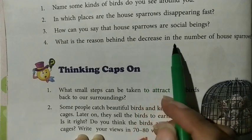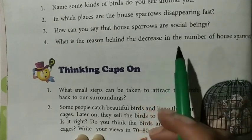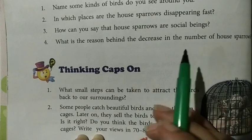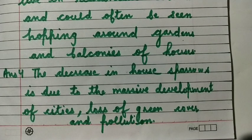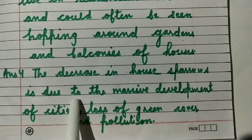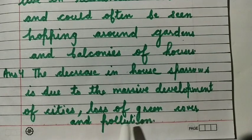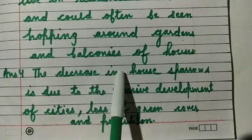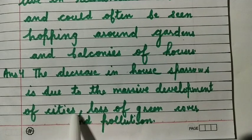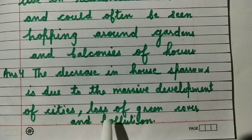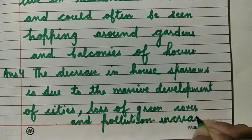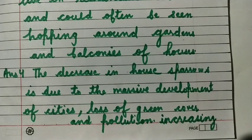Question four: what is the reason behind the decrease in the number of house sparrows? Answer number 4 — this is your last answer: the decrease in house sparrows is due to the massive development of cities, loss of green cover, and increasing pollution. Because of city development, there are fewer trees and more pollution, causing a rapid decline of sparrows.